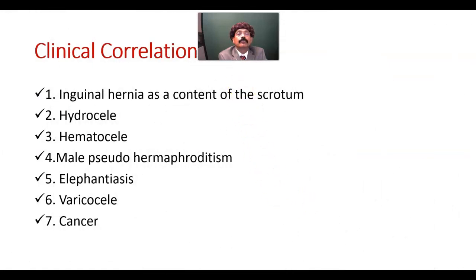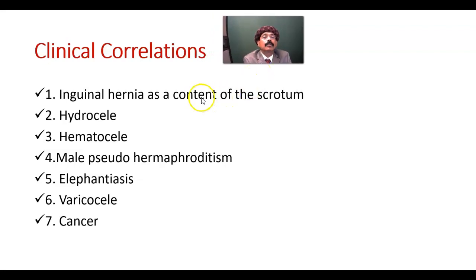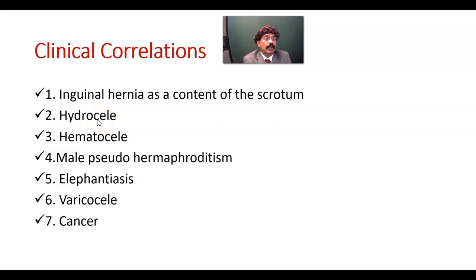Some clinical correlations: Inguinal hernia is a content of the scrotum, specially seen in indirect inguinal hernia. Direct inguinal hernia may also lead to the upper part of the scrotum. Hydrocele is present between the parietal layer of the tunica vaginalis and the visceral layer of the tunica vaginalis.